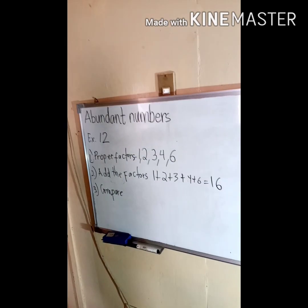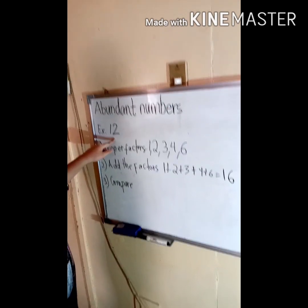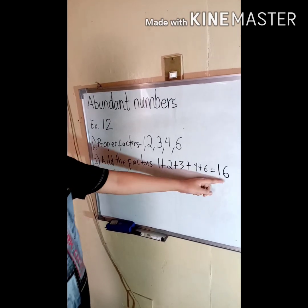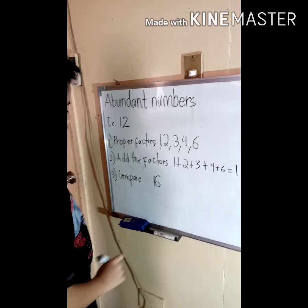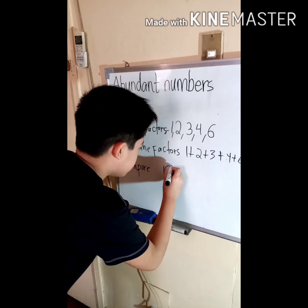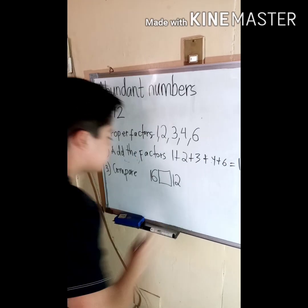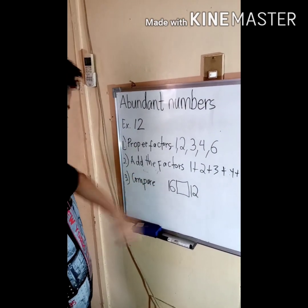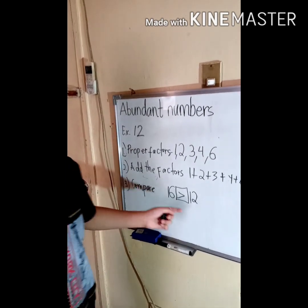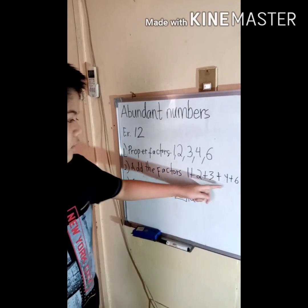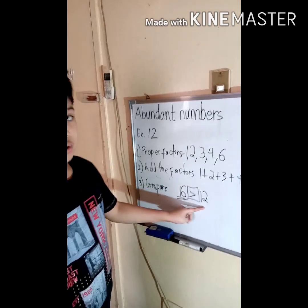Now we need to compare the given number with the sum of the proper factors. So we compare 16 and 12. Since 16 is bigger, that means the sum of its proper factors, which is 16, is greater than the given number 12. So 12 is an abundant number.